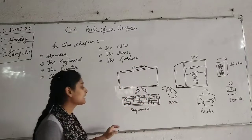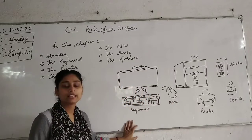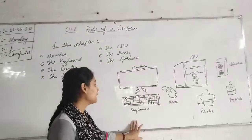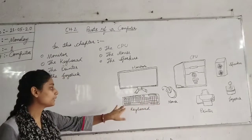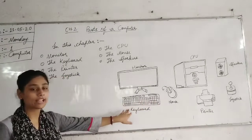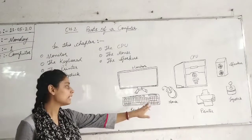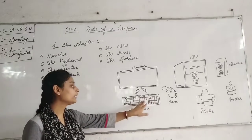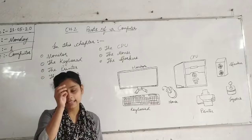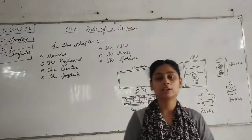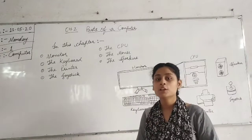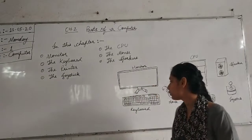Next is the keyboard. Keyboard has many buttons on it. These buttons are called keys. We can easily type any alphabet or letter using this keyboard.